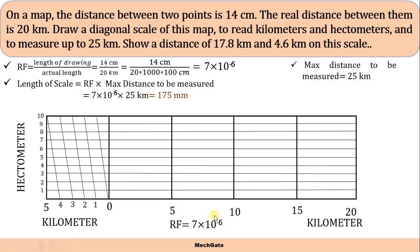On this diagonal scale, I have to represent 17.8 kilometers. It consists of 15 + 2 + 0.8: so 15 plus 2 gives 17, and 0.8 kilometer is nothing but 8 hectometers. We have to move diagonally up to 8.